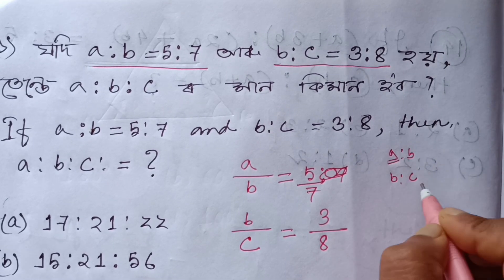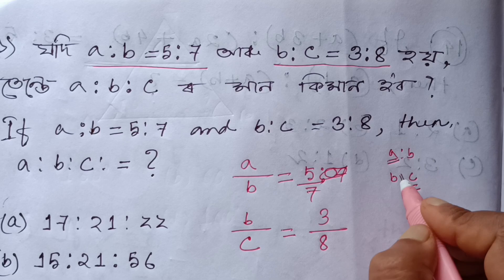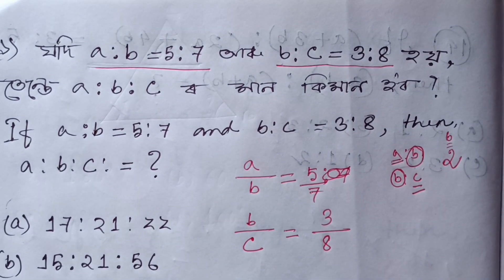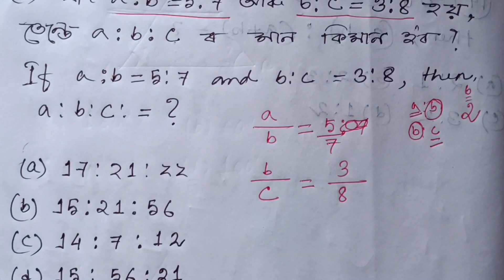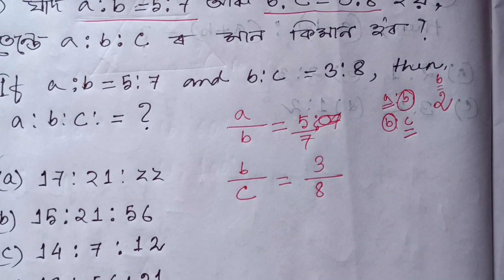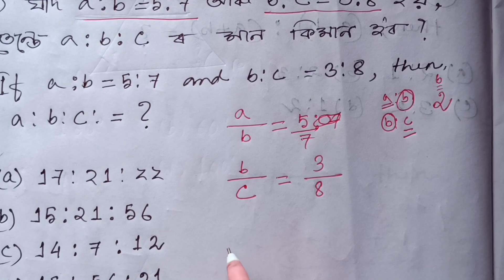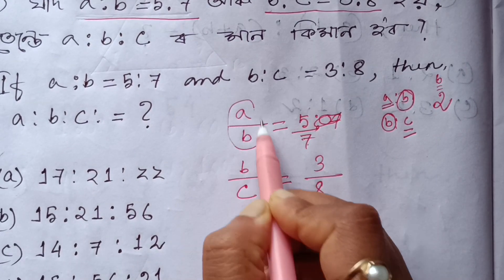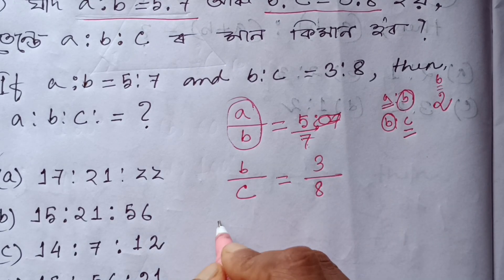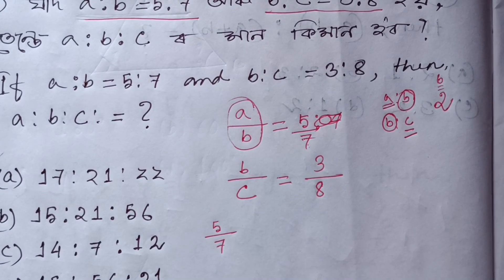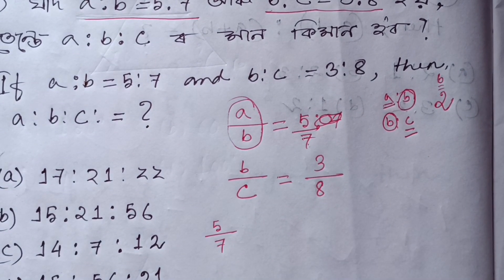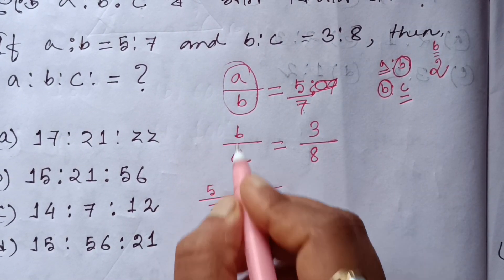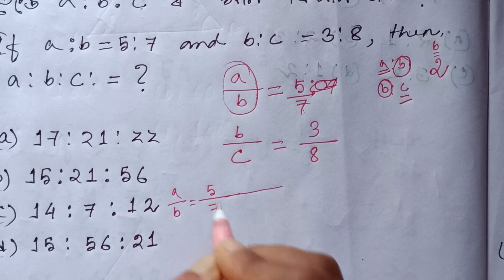So A to B equals 4 to 8, but this is A to B equals 5 to 7. I will write it out of the answer. Let me write it out. The first A to B equals 5 to 7.